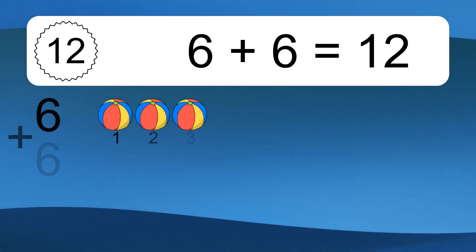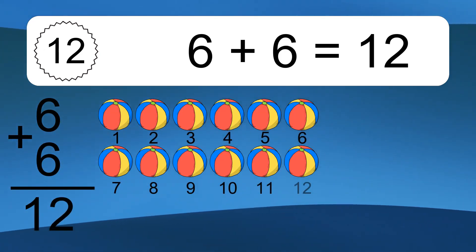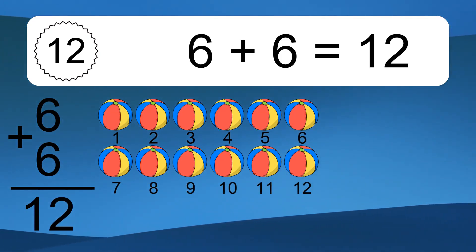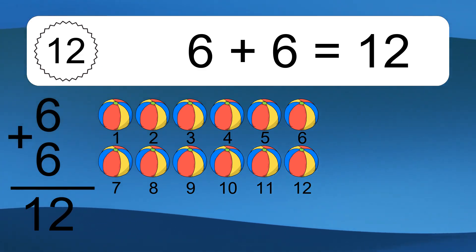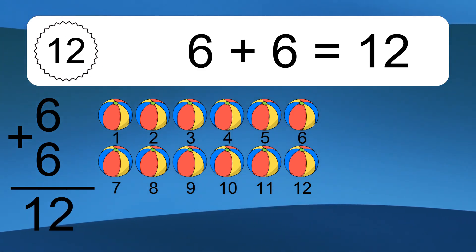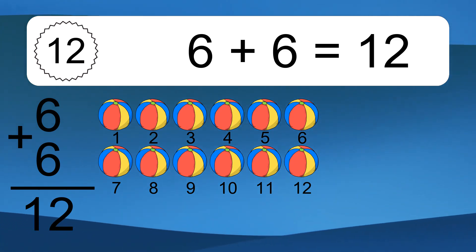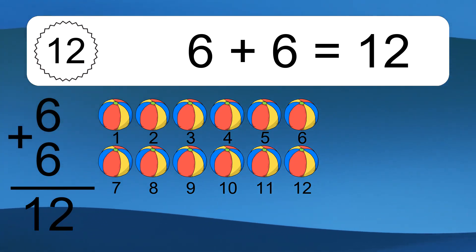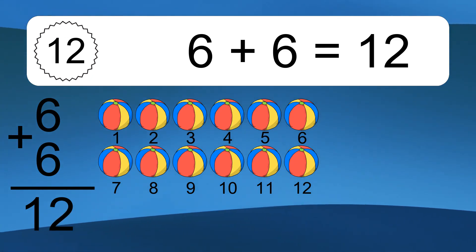6 plus 6 equals what? 6 plus 6 equals 12. Let's count it. 1, 2, 3, 4, 5, 6, 7, 8, 9, 10, 11, 12.